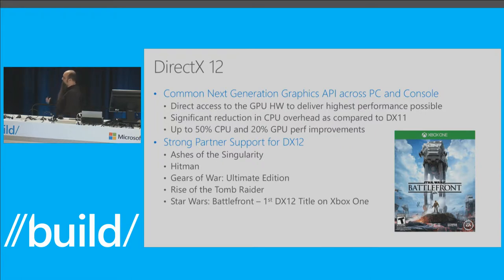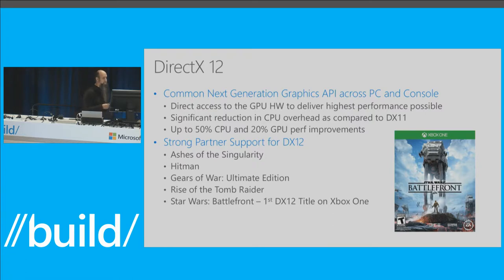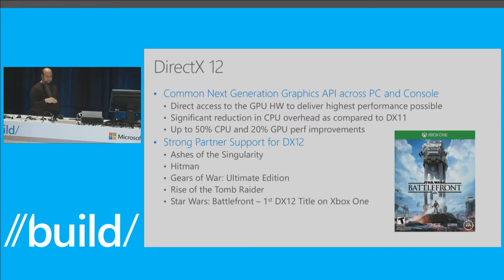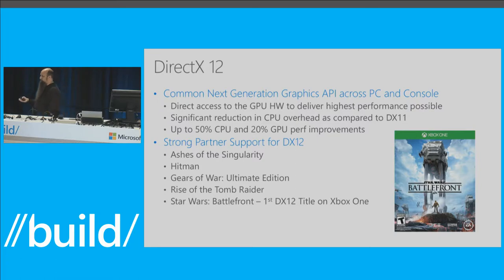On the graphics side, with Windows 10 we introduced DirectX 12 — a common next-generation graphics API that works across PC and console. This gives you direct access to GPU hardware to deliver the highest performance possible. One of the big improvements with DX12 is it significantly reduces CPU overhead compared to DX11. We've seen with some early titles up to a 50% CPU improvement and up to a 20% GPU performance improvement compared to DX11.